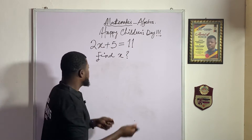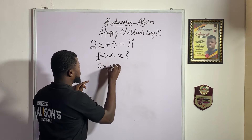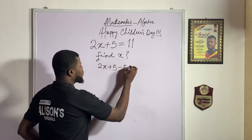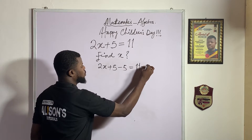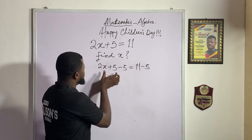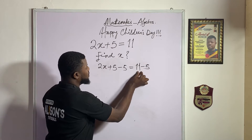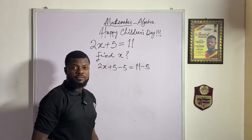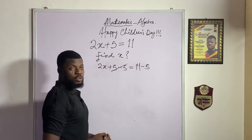This is the solution: 2x + 5 minus 5. I'm subtracting 5 from both sides of the equation — minus 5 here and also minus 5 on the other side. So 5 minus 5 gives us zero.